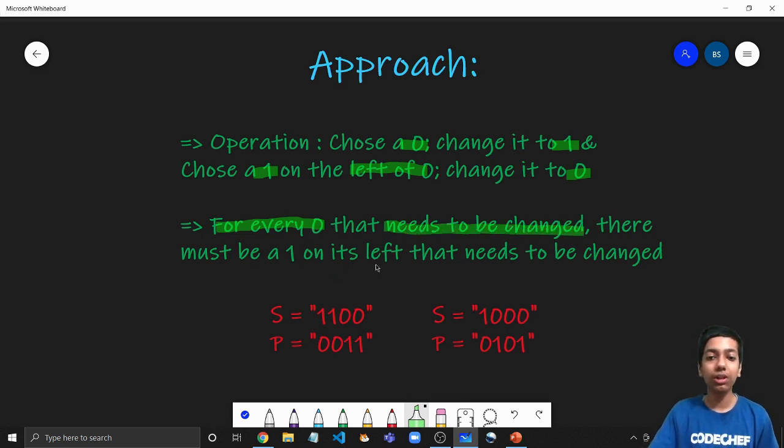So now, now this is the operation that we have. And the idea that we are going to use is that for every 0 that needs to be changed, there must be a 1 on its left that needs to be changed as well. So in this question, we are only talking about those indices that do not match. So if there is 1, let us say the third element of s is 1 and the third element of p is also 1, well in that case, we do not need to take care of that. That is already matched. So we are only taking elements that need to be changed that are initially mismatched. So for every 0 that needs to be changed, there must be a 1 on its left that needs to be changed as well. Using the above operation, we can say that for every 0 we have that needs to be changed to 1, there must be at least one 1 on its left that needs to be changed as well, so that I could choose that 0 and that 1 in 1 operation and I could swap them and in other words, make that 0 1 or 1 0.